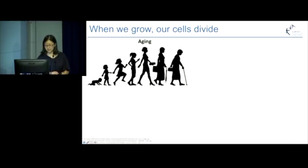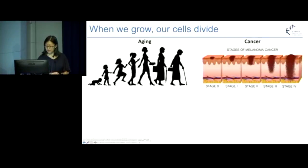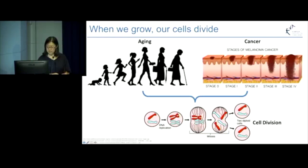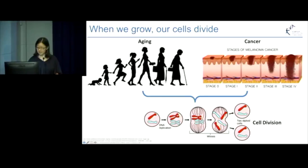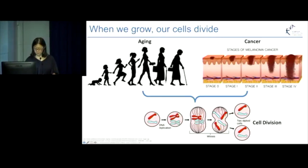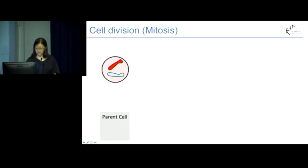Whether we're growing older or whether cancer grows, they undergo the same biology of cell division. The difference between ageing and cancer is that while cell division is controlled in ageing, it becomes out of control in cancer. I'll go through what I mean by cell division.